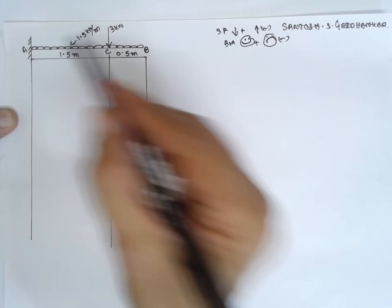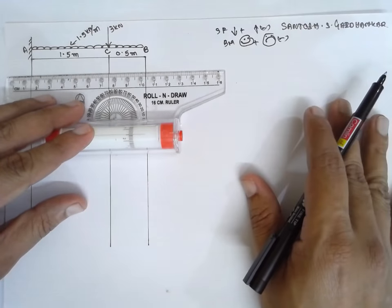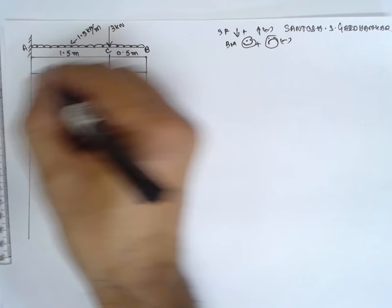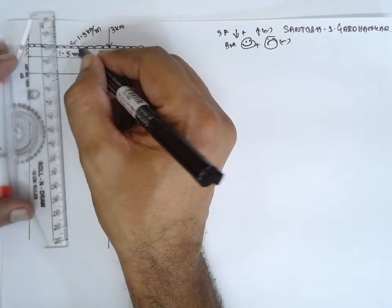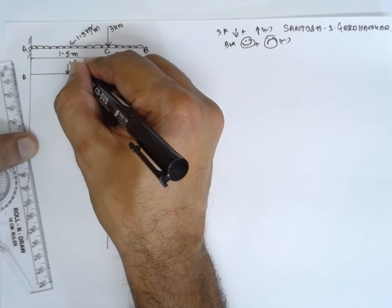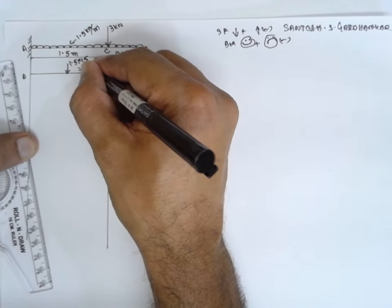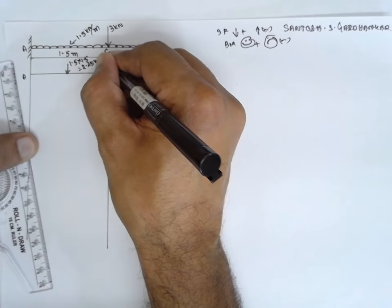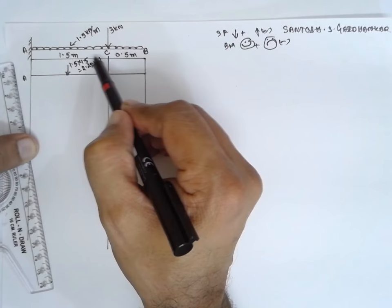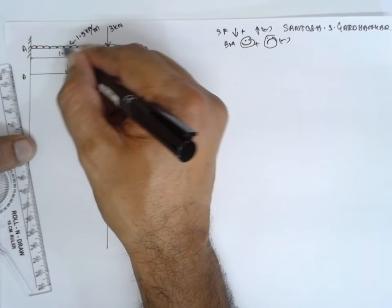Now first I will convert to point load. I will convert this into point load. This is at A, 1.5 exactly at the centroid because it is UDL. Centroid is 1.5 into 1.5. If you calculate, the answer will be 2.25 kilonewton because meter meter get cancelled. The arrow has to be done exactly at the center, that is half.